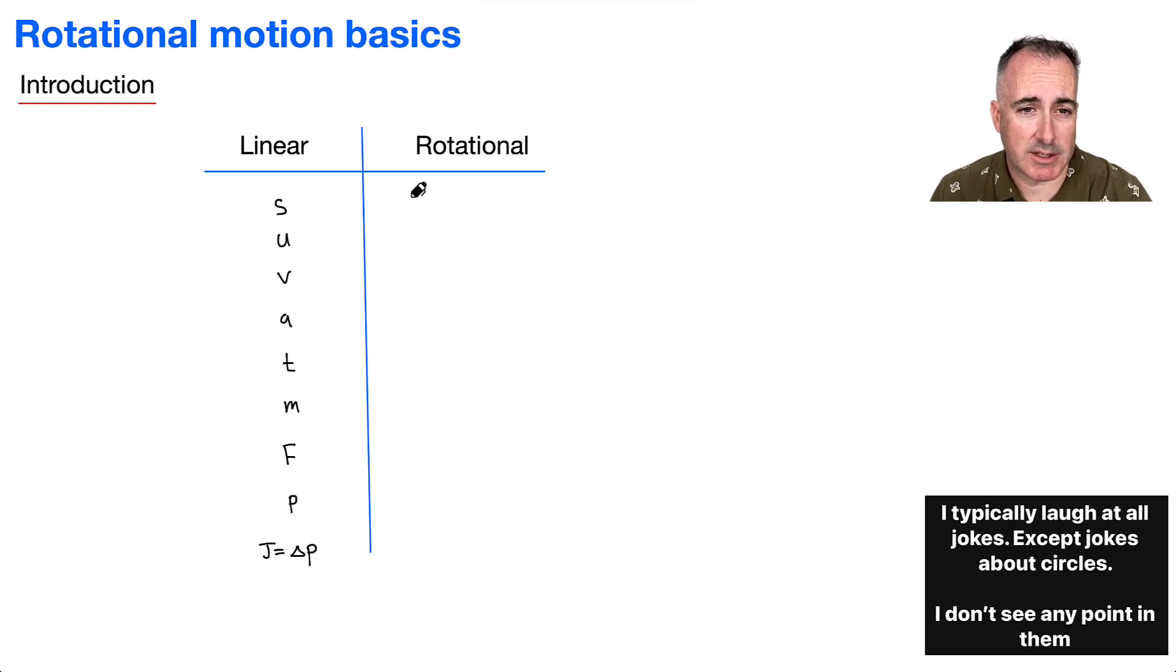So linear, for example, S is displacement. This right here is going to be called delta theta. U, which is the initial speed, is going to be called omega I. That's going to be the angular velocity, for example. This one right here is going to be omega F, so the final. Instead of A, we're going to write alpha. That's a Greek symbol. T is still going to be time, which is nice.